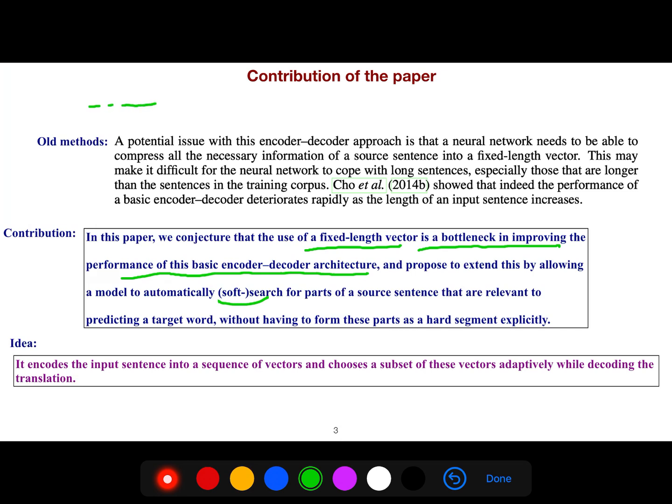For example, we have an utterance, an input, and we have some output translation. Then we see, we try to align this word, for example, one word in the output in German that could be related to two words or one word in English. So we try to align this word in English.